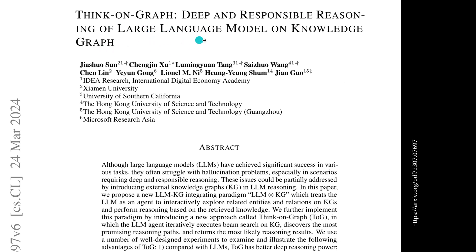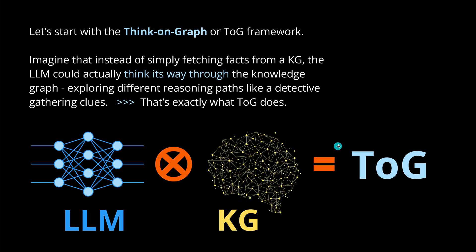ThinkOnGraph: responsible reasoning of LLMs on Knowledge Graphs. Reference work from IDEA Research, University of Southern California, Xiamen University, Hong Kong University, and Microsoft. Instead of just fetching simple facts from a Knowledge Graph, the LLM can actually think its way through the Knowledge Graph, exploring different routes — it works like a detective gathering clues. This is exactly what ThinkOnGraph does.